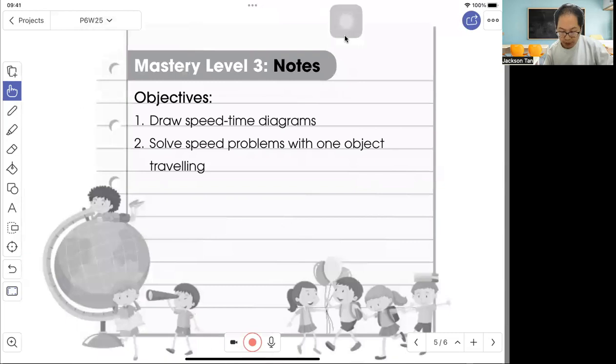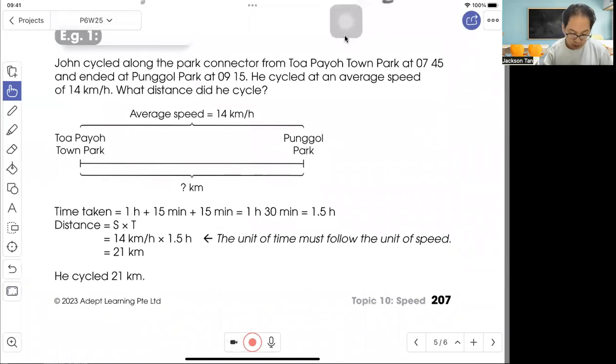Mastery level three: Draw a speed-time diagram and solve speed problems with one object traveling. John cycled along the park connector from Toa Payoh Town Park at 0745 and ended at Punggol Park at 0915. He cycled at an average speed of 14 km per hour. How far did he travel? First I need to know the time. From 0745 to 0915, the time taken is 1 hour 30 minutes. That's one and a half hours. To find distance: speed times time, 14 km per hour times 1.5 hours equals 21 km. So he cycled 21 km. Make sure that the unit of time and speed must follow.